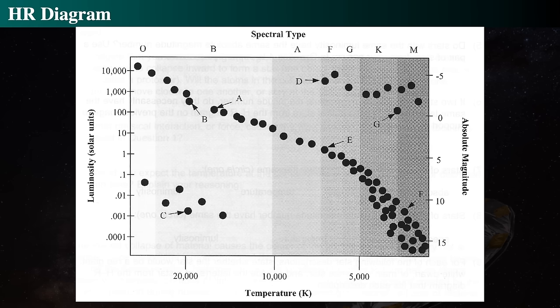Here are some practice questions about the HR diagram for your amusement. Looking at stars D and E on the diagram — which one is bigger? Stars F and G — which one is bigger? Which would be bigger, star A or star G? Which one is hotter, star E or star A? Which one is smaller, star B or star C? Which one is smaller, star D or star C? You can play all sorts of games with this diagram, so enjoy.